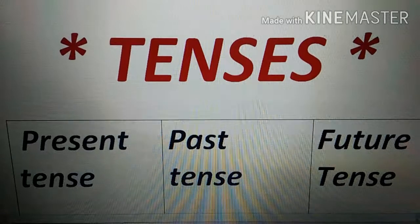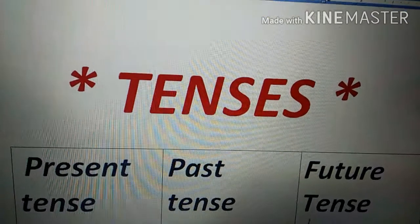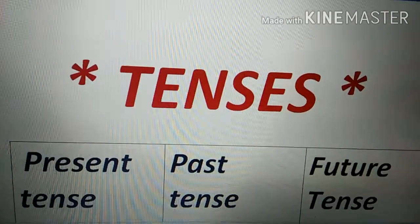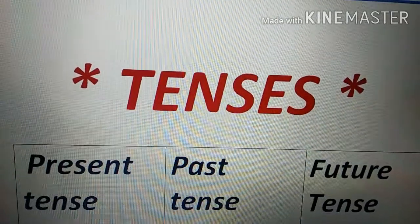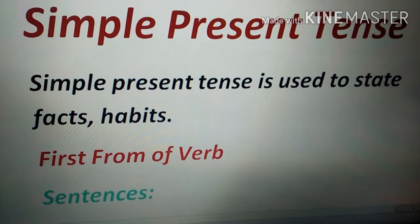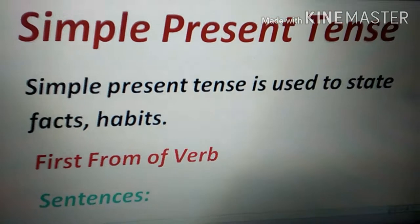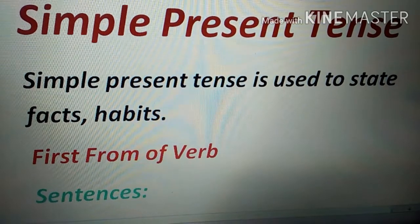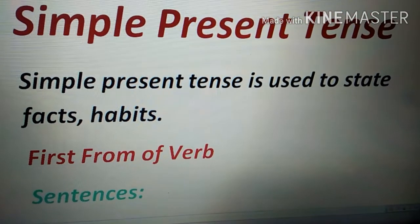Present tense is something that is happening right now in the very present moment, or any action that started in the past. Now, when we talk about present tense, past tense, and future tense, they all have subcategories — four subcategories each — so in all we have 12. Starting with the present tense, we'll first talk about the simple present. We are not going to cram anything; I'll give you formulas for each tense.